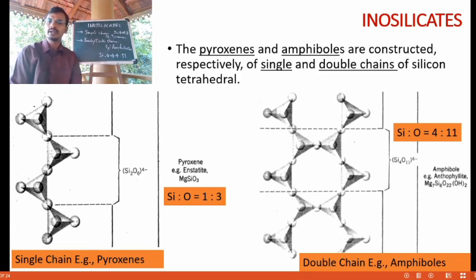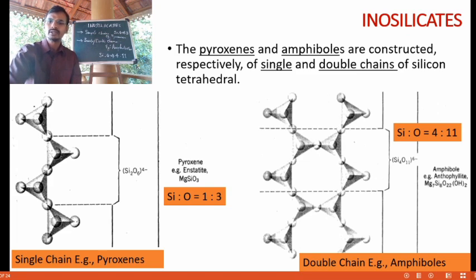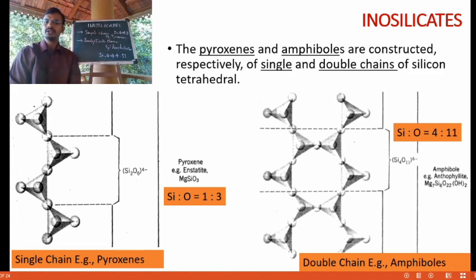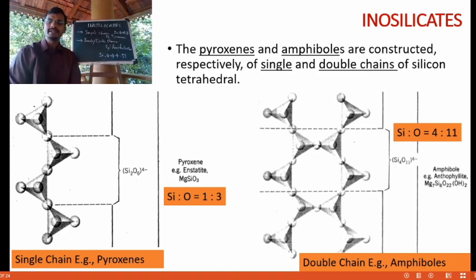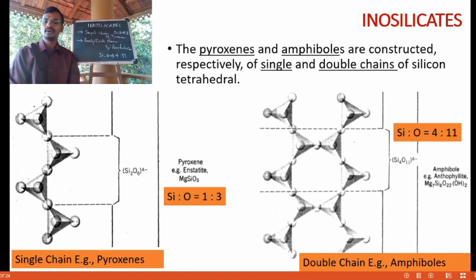In the double chain group, as shown in the figure, some tetrahedra share two oxygen anions and some share three oxygen anions — that is, alternate tetrahedra share three oxygen to form a double chain. One tetrahedra shares three oxygen with adjacent tetrahedra whereas others share only two oxygen at the corners. Taking a unit of four tetrahedra sharing 11 oxygen anions gives a structural formula of Si4O11 with a valence of minus 6. Amphibole and anthophyllite, having a composition of Mg7Si8O22(OH)2, is an example for the amphibole group.